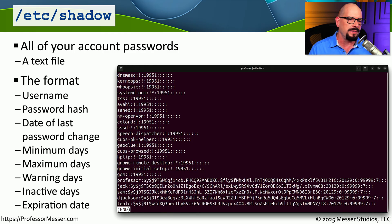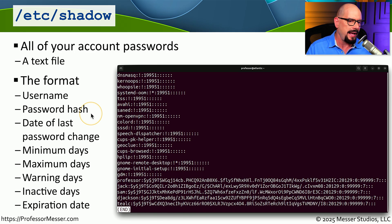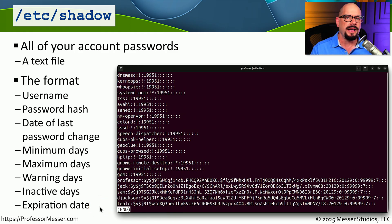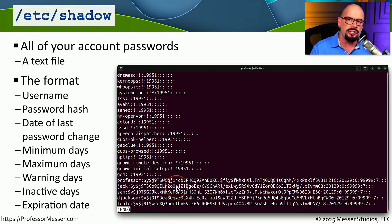The shadow file format is similar to the passwd file — it has a list of usernames, a password hash, the date of the last password change, and other parameters. It's important that this file is protected because we don't want that password hash in the hands of an attacker, who could reverse engineer or brute force the real password from the hash stored in the shadow file.